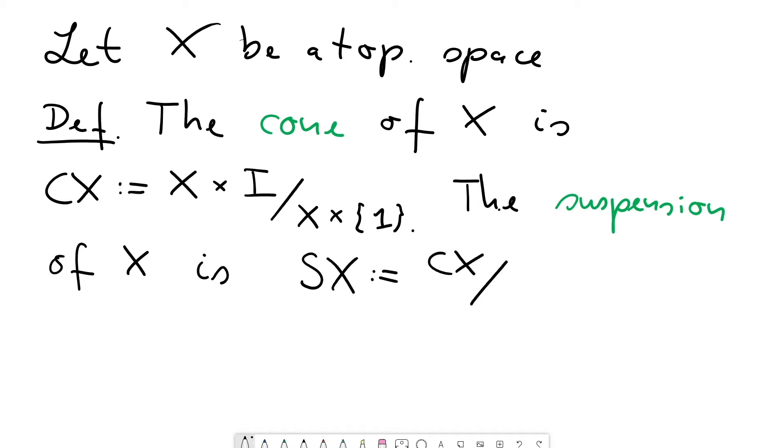So you take now the cone mod out X times 0. And the terminology should be pretty clear.